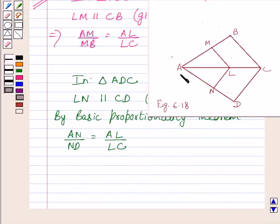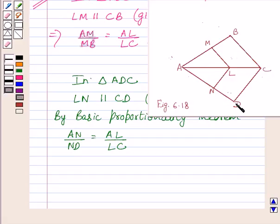Now, in triangle ADC, AN upon ND is equal to AL upon LC, and in triangle ABC, AM upon MB is equal to AL upon LC. So we get AM upon MB is equal to AN upon ND, since both ratios are equal to AL upon LC, so these two ratios must be equal.